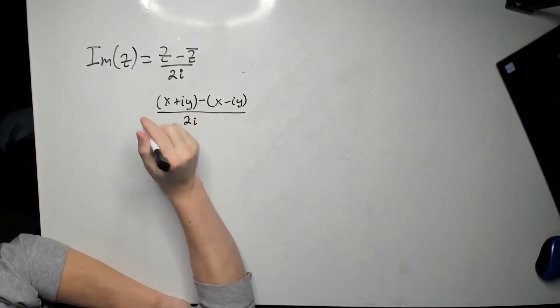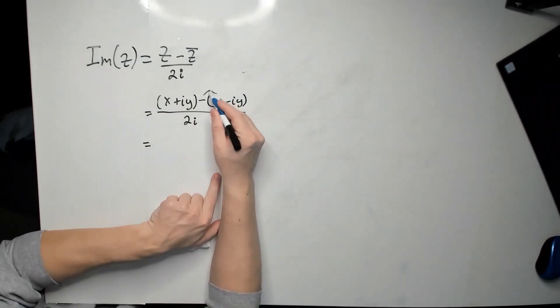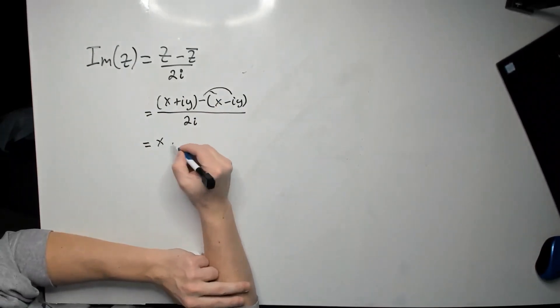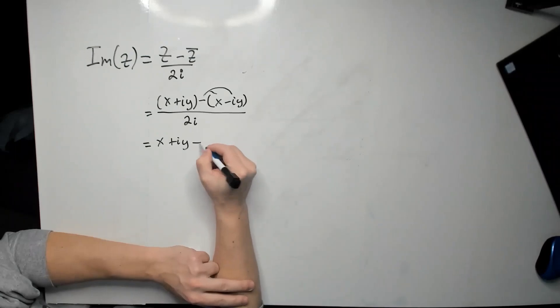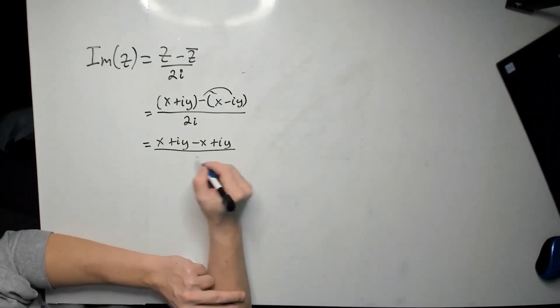Okay, let me rewrite these so they fit better. So now, distribute that negative to each term here. So I have x plus iy minus x plus iy. That whole thing is divided by 2i.